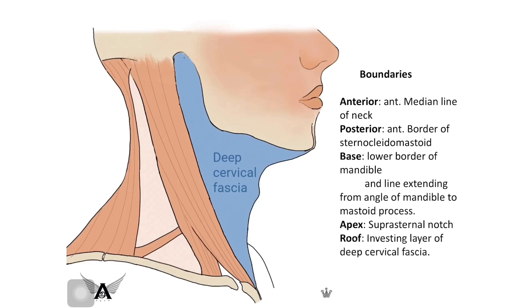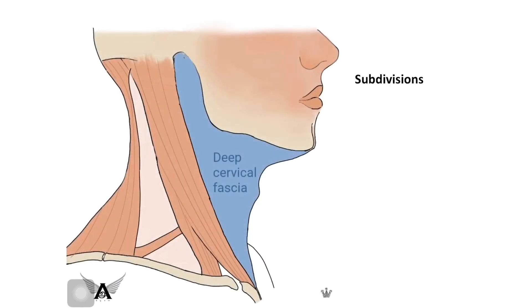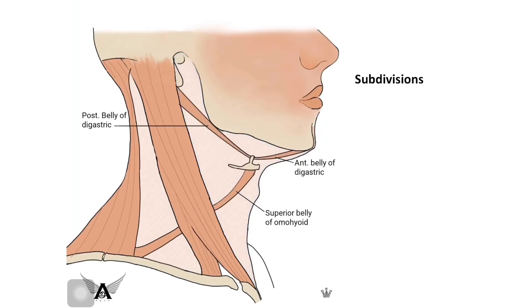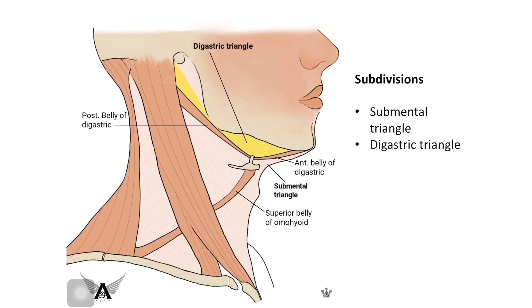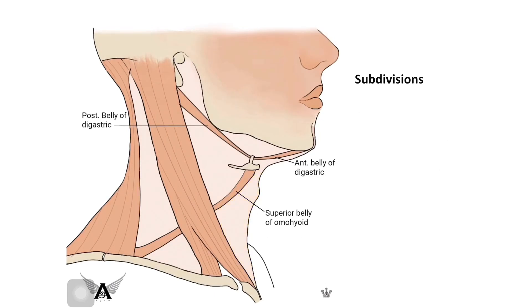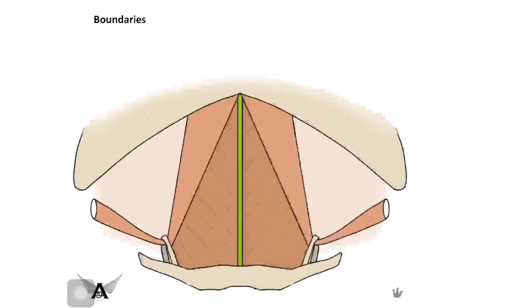Moving on to the subdivisions, the anterior triangle is further divided into four subdivisions by three muscles: the anterior belly of digastric, the posterior belly of digastric, and the superior belly of omohyoid. The subdivisions formed are the submental triangle, the digastric triangle, the carotid triangle, and the muscular triangle.